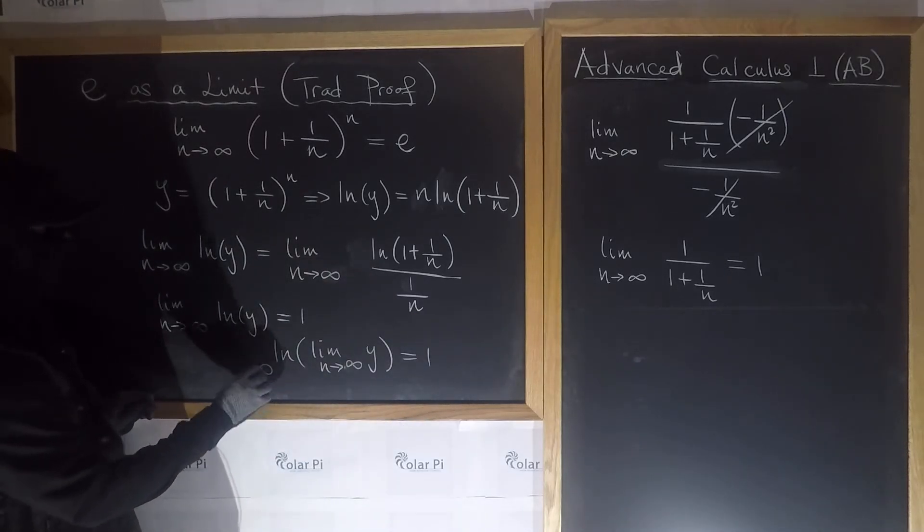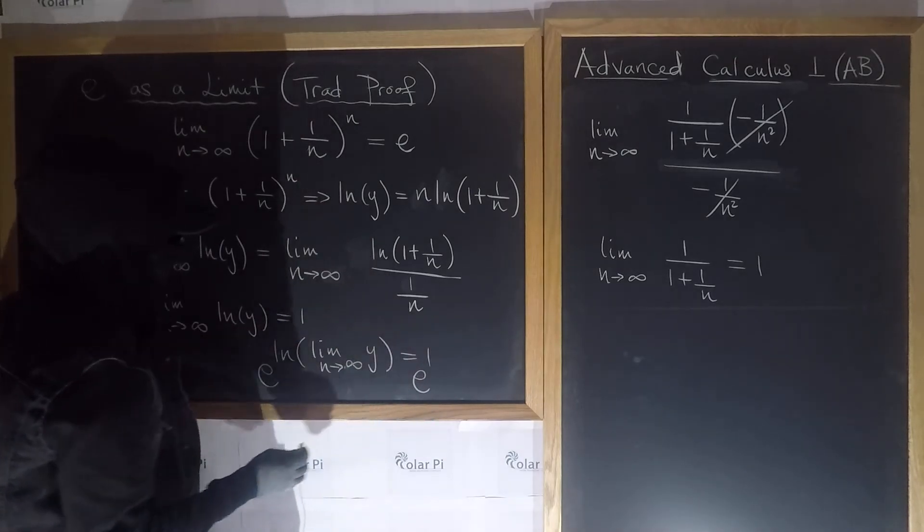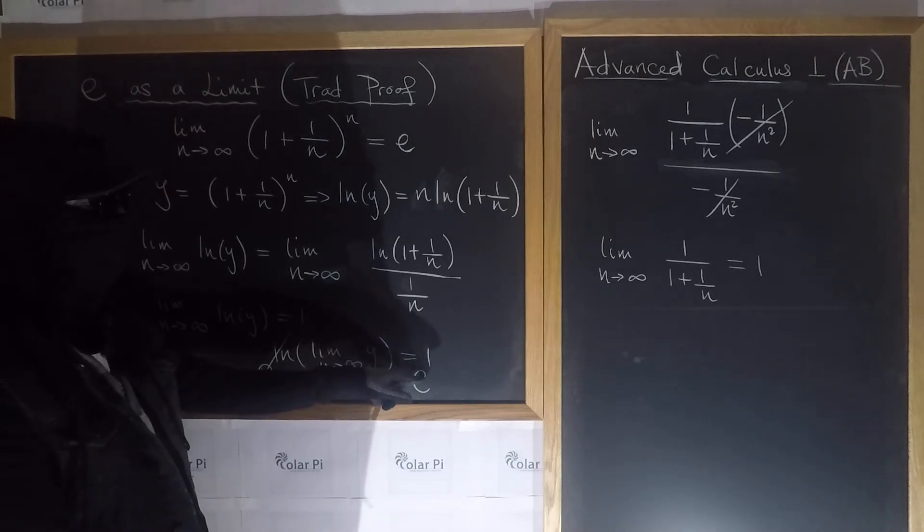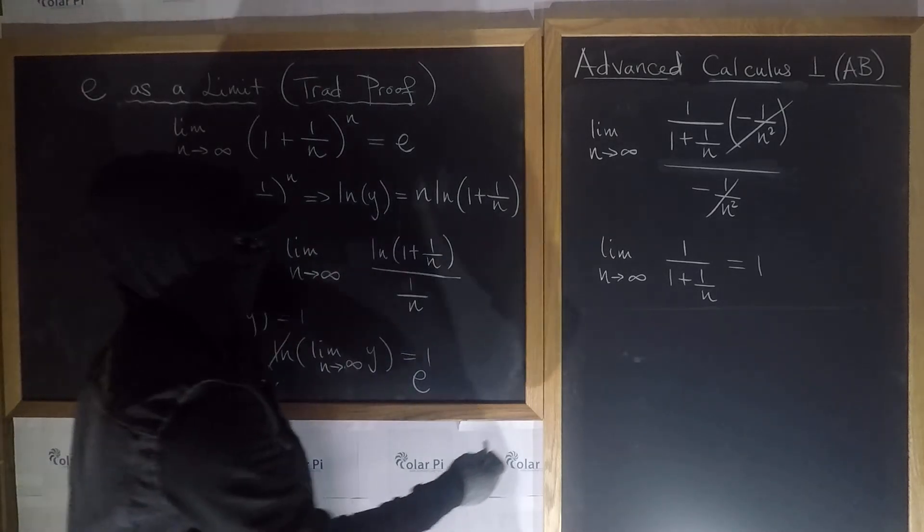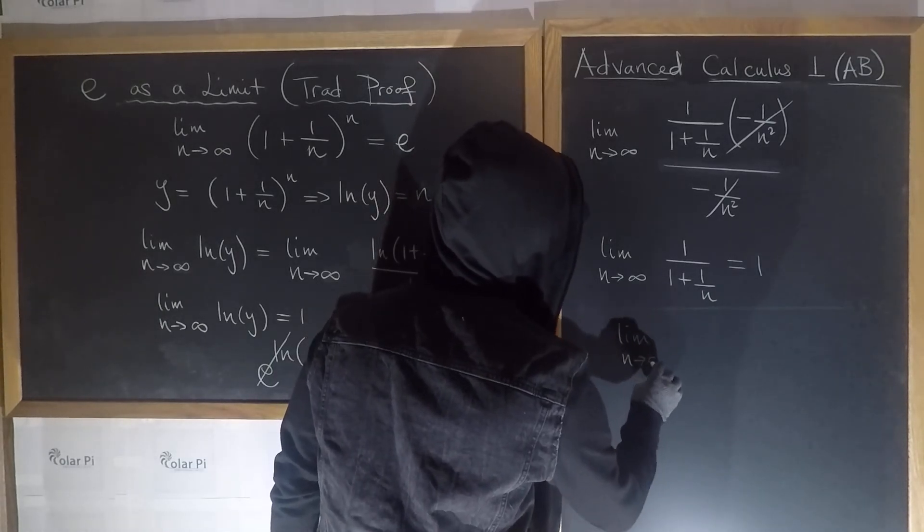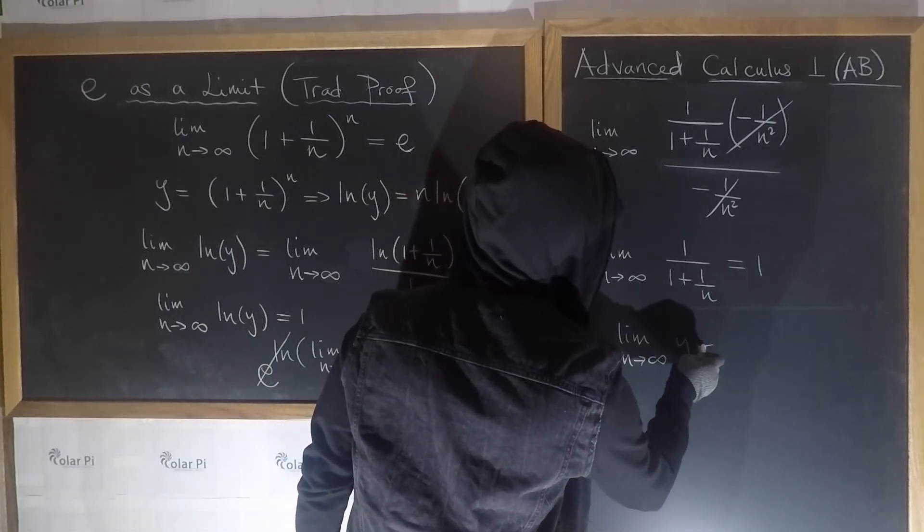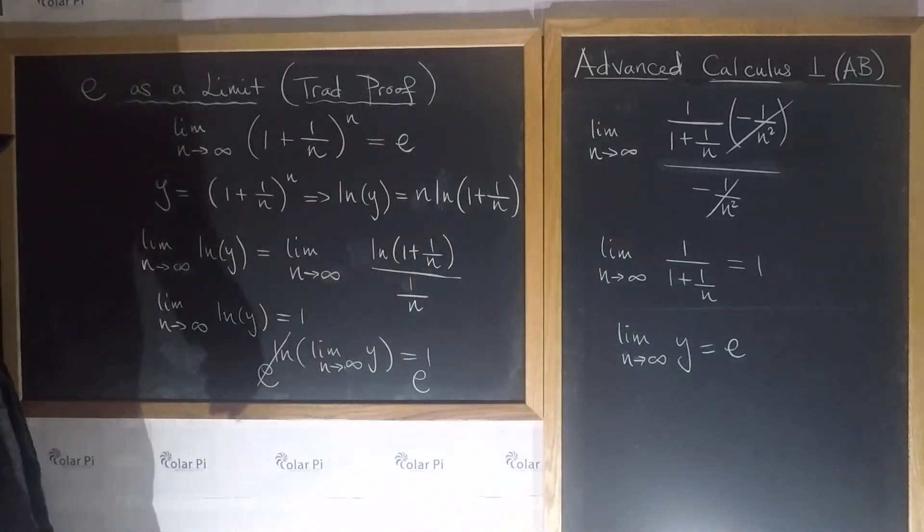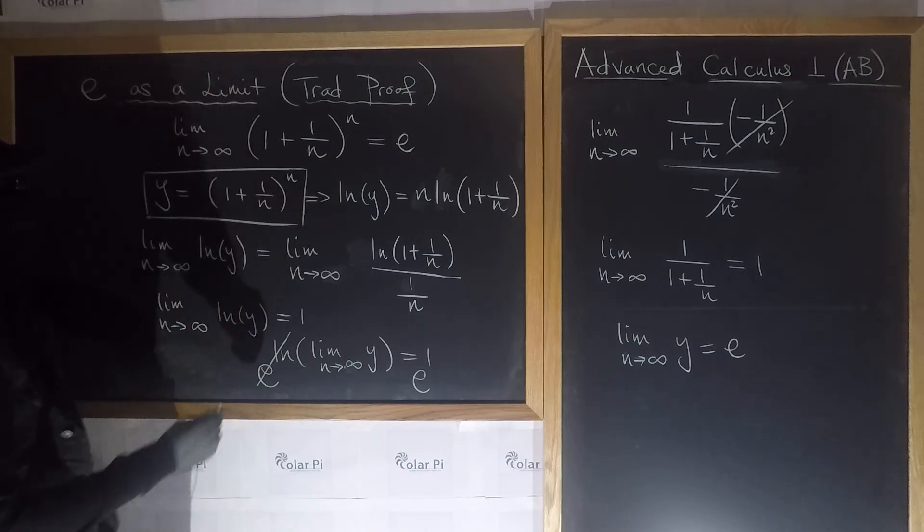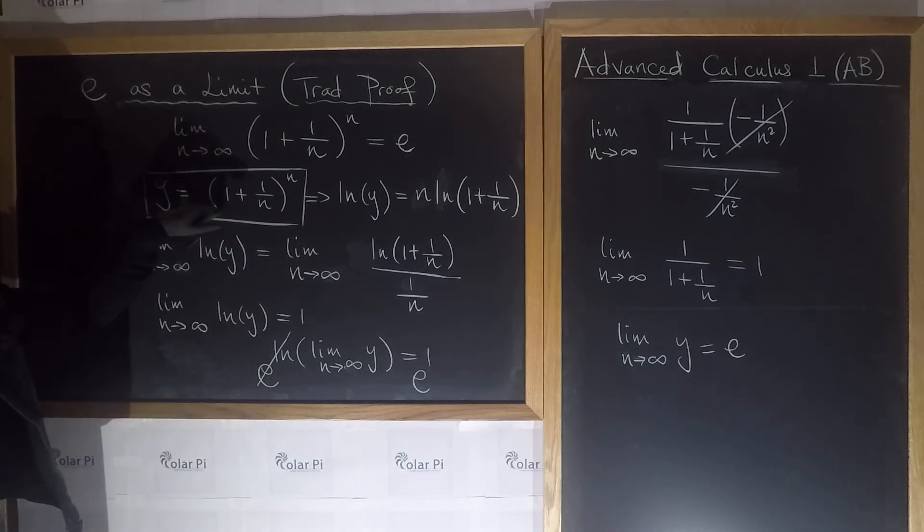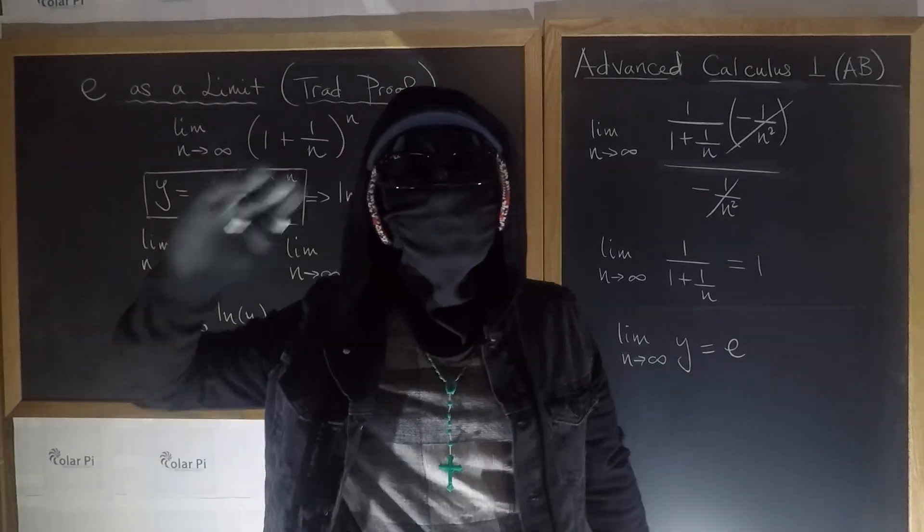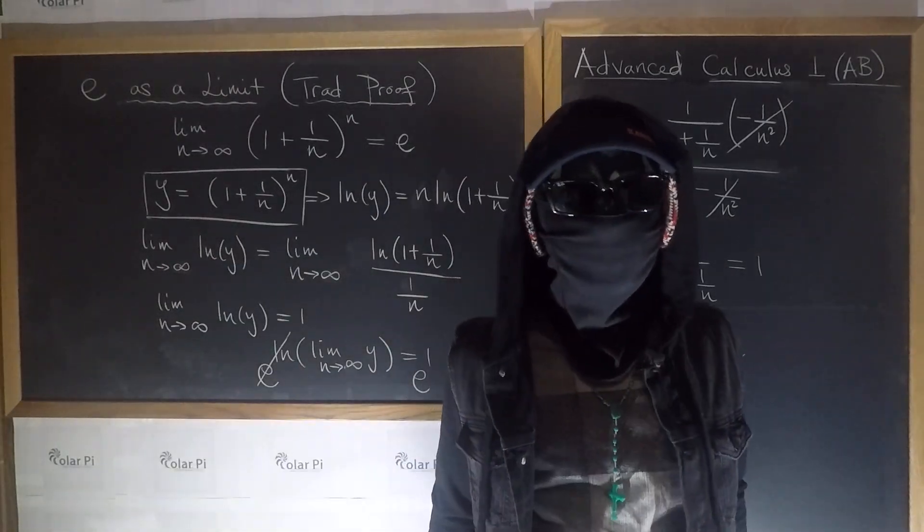And next I go e, e to both sides. So that means that lim as n goes to infinity of y is e^1. So we conclude that lim as n goes to infinity of y is equal to e. But wait, we said that y was right here, and therefore we're saying lim as n goes to infinity of (1 + 1/n)^n is e, as desired. Okay cool, I hope you enjoyed this. Take care, keep watching.